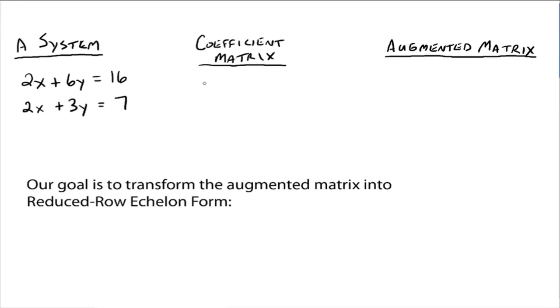Alright, so if we want the coefficient matrices, then we just want the matrix that contains the coefficients. Well, the coefficients would be 2, 6, 2, and 3. And so you would write it as such, 2, 6, 2, 3.